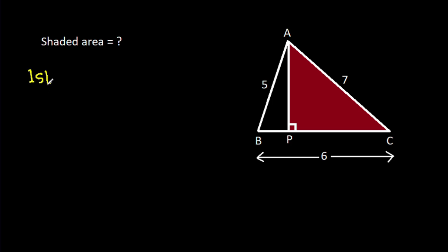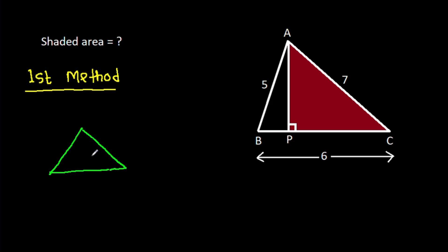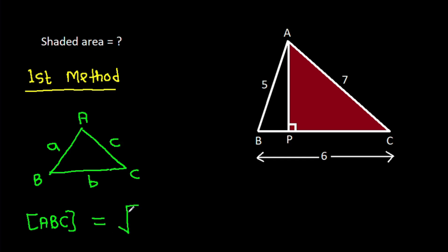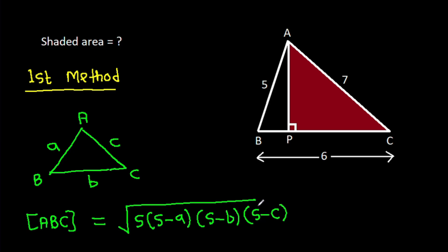The first method: in any triangle ABC, if AB is A, BC is B, AC is C, the area of ABC is root under S times (S minus A) times (S minus B) times (S minus C), and S is A plus B plus C over 2.